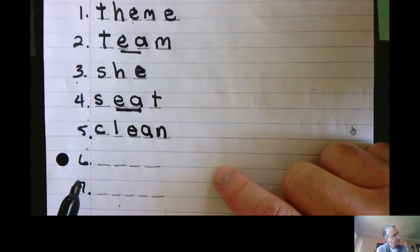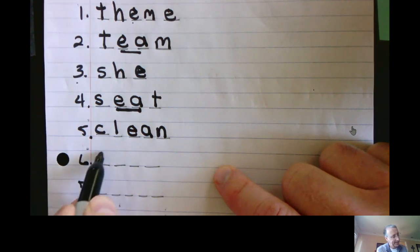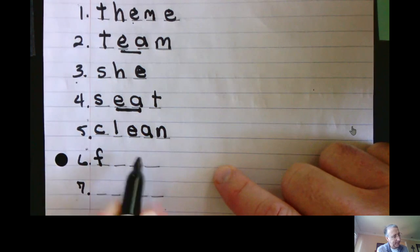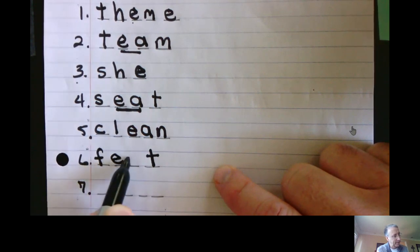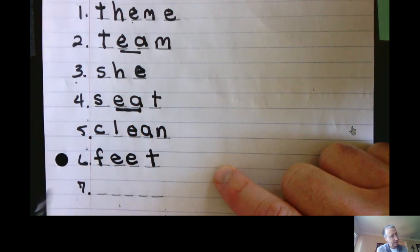Number six. Feet. My feet smell. F-E-E-T. And on the last, the consonant is T. Feet. Two E's.